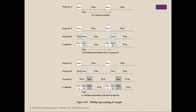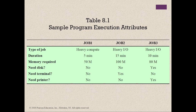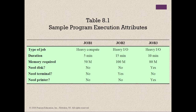Table 8.1 shows sample program execution attributes illustrating the benefit of multi-programming. Consider a computer with 250 megabytes of available memory and three programs — job 1, job 2, and job 3 — submitted for execution at the same time. In a simple batch environment, these jobs execute in sequence: job 1 completes in 5 minutes, job 2 must wait until 5 minutes is over and then completes 15 minutes after that, and job 3 begins after 20 minutes and completes at 30 minutes from initial submission.